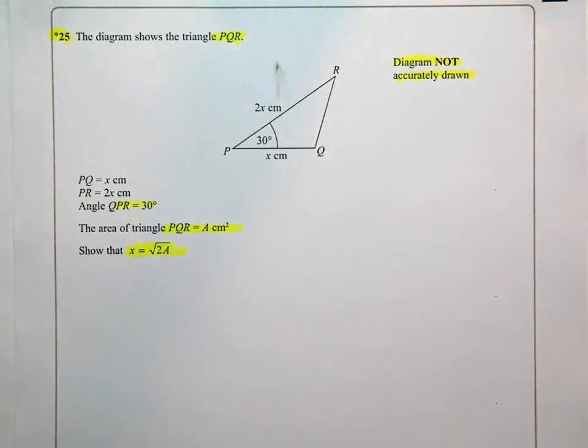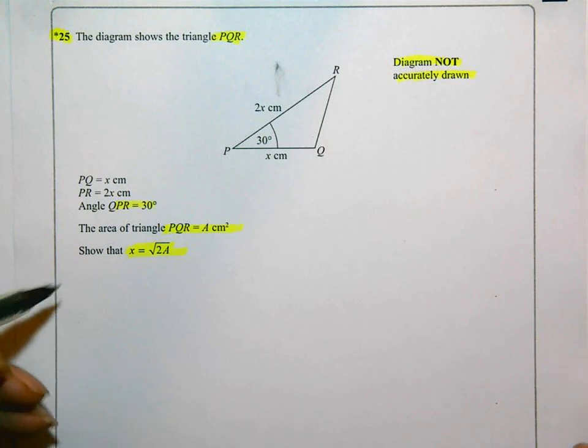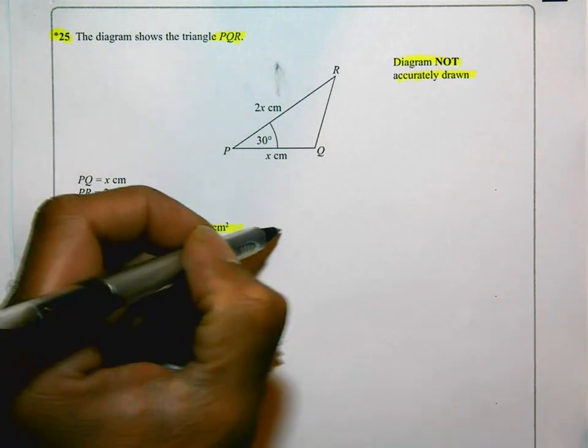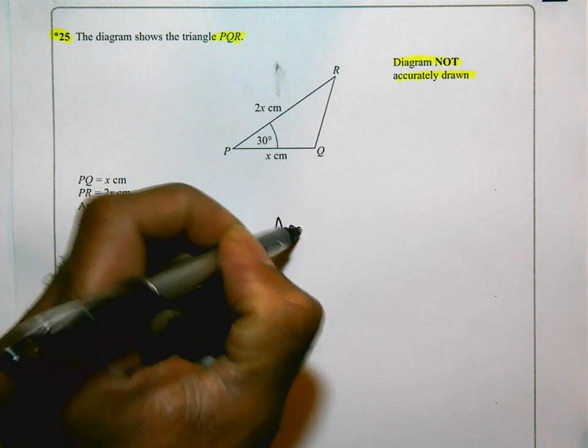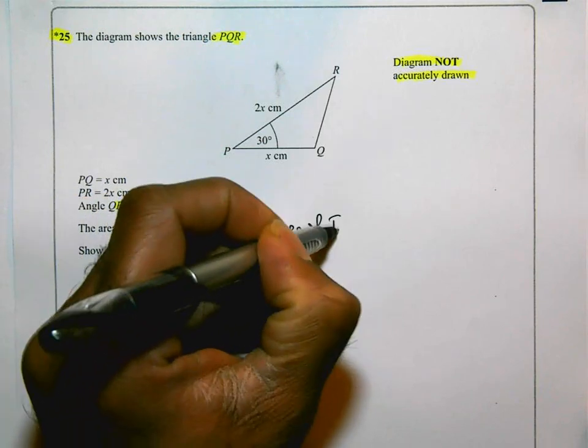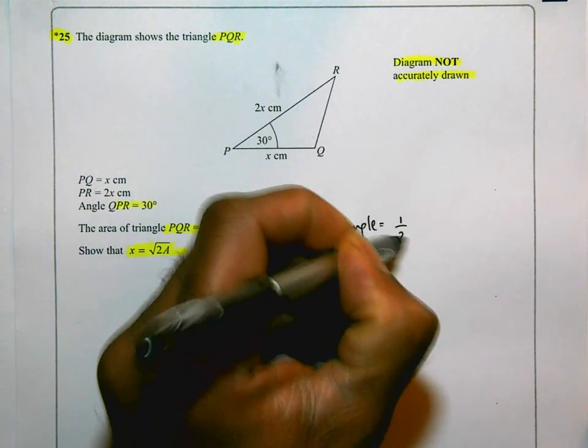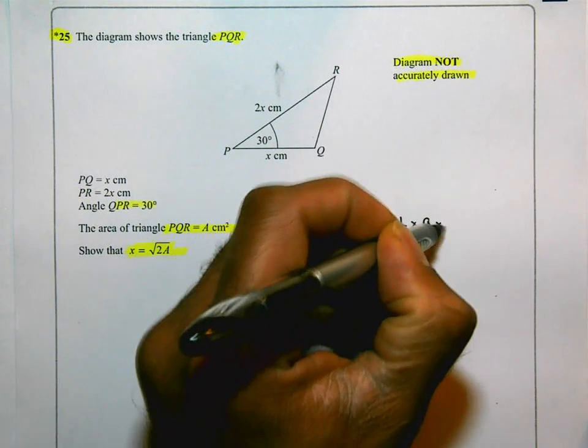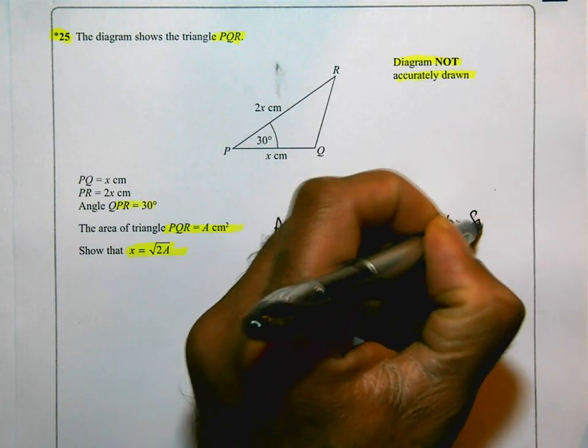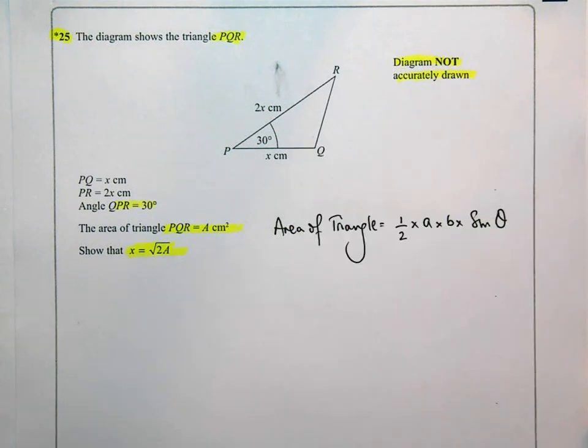And you should be familiar with this, especially if you're attempting questions at the top end of the paper with the intention of getting full marks. So area of triangle is going to be a half times A times B times sine of the angle between them. I'll just put theta there but that sine of the angle between them.